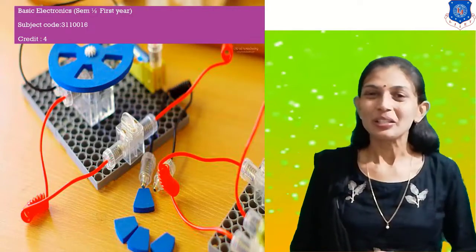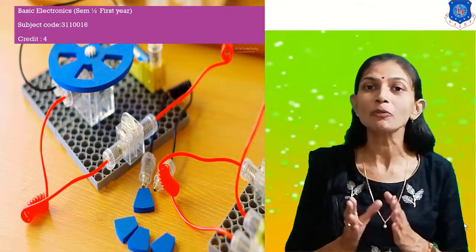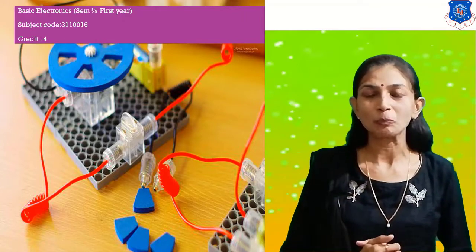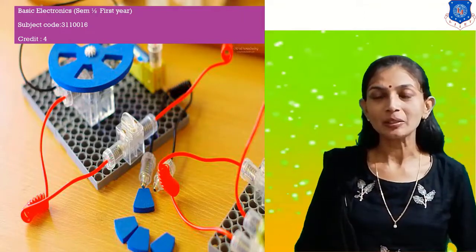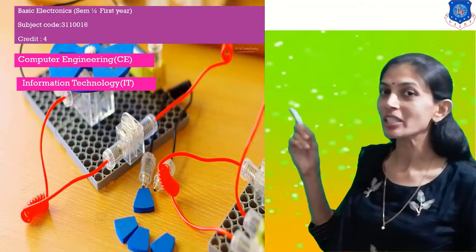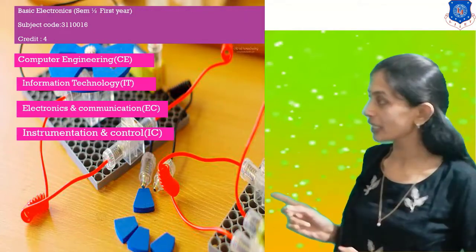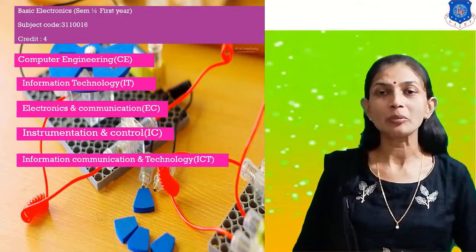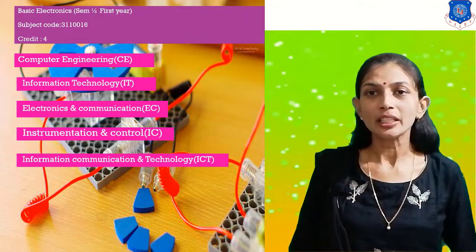Let's get back to the subject — Basic Electronics. I would like to start the discussion and explanation of Basic Electronics. This subject is important and it is offered by GTU in semester 1 or 2. It is offered in computer engineering, IT (information technology), electronics communication (EC branch), IC (instrumentation and control), and ICT (information communication and technology) branches. The subject code of Basic Electronics is 3 1 1 0 0 1 6.